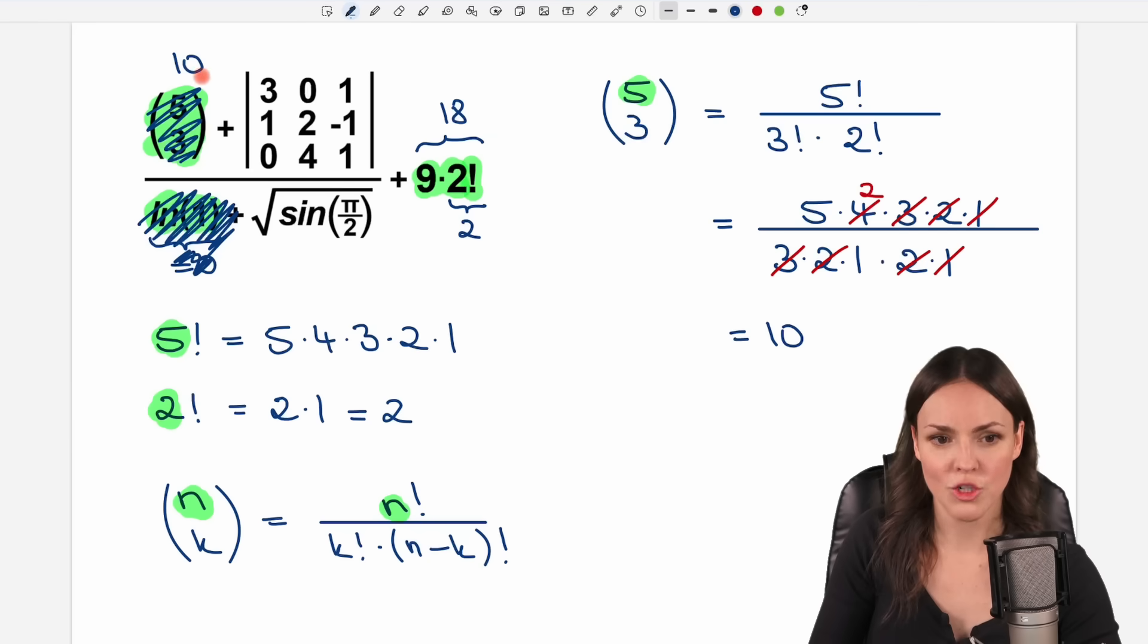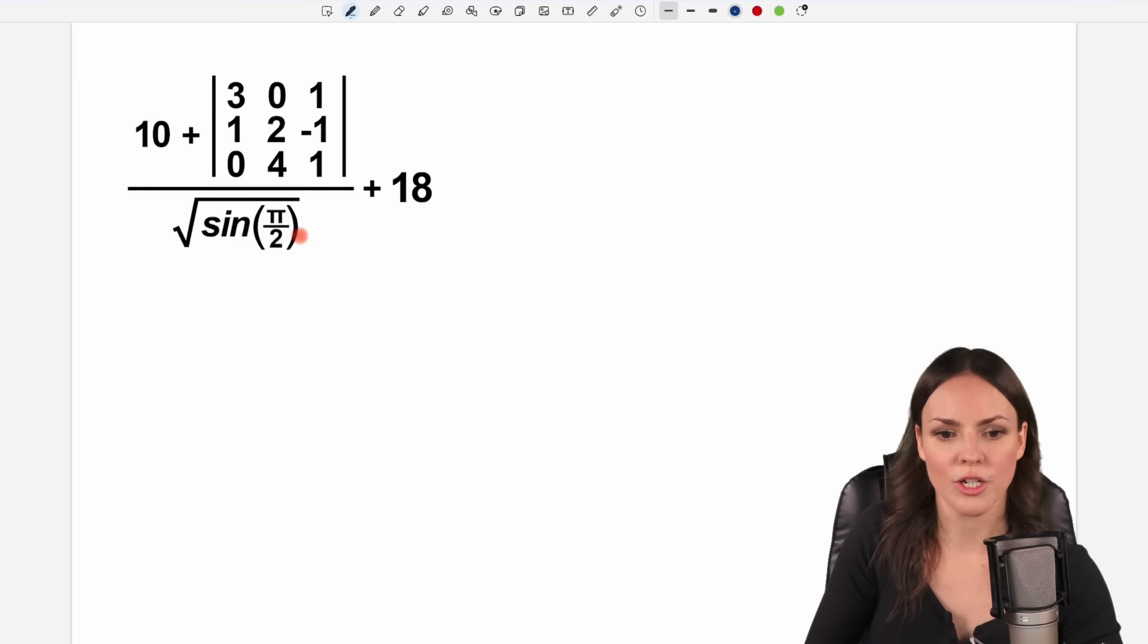So this thing here equals 10. And my expression I wrote it down on the next page again. I have my 10 here, my 18 here. This thing is not there anymore. So my expression looks like this now. It's getting better. We will find out when life begins soon.